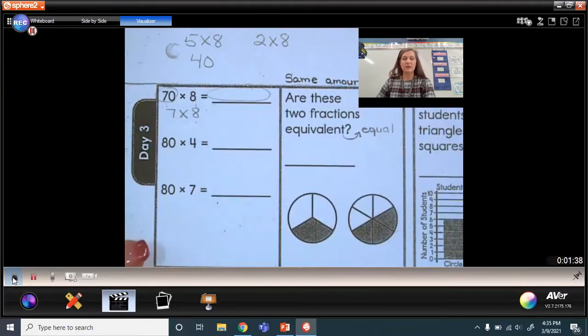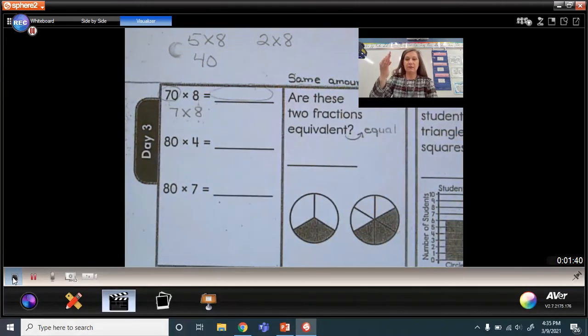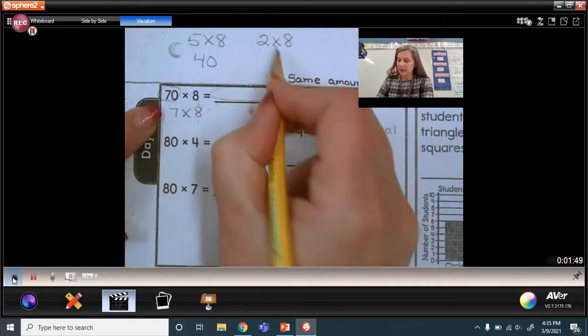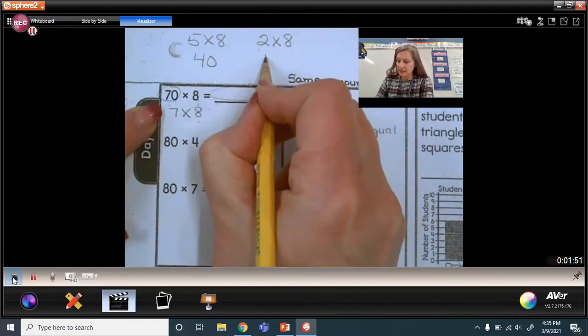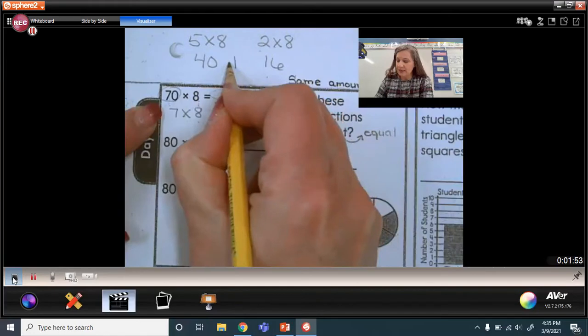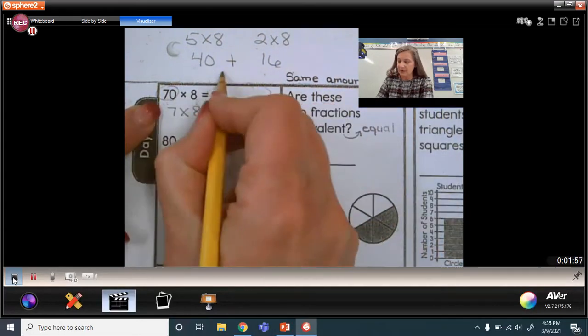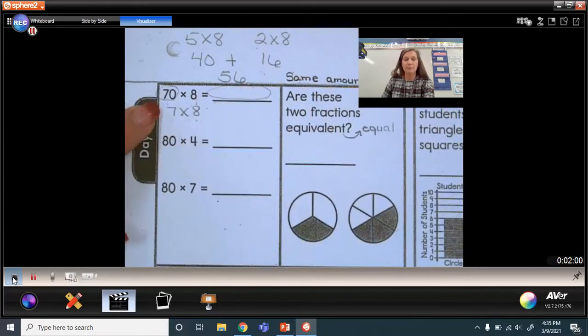So what is 5 times 8? If you said 40, you would be correct. So counting by fives, I say 5, 10, 15, 20, 25, 30, 35, 40. So I have 40. And another 2 groups of 8 would be 8 plus 8 is 16. So that tells me I have 56. When I add these together, 56 is going to be my total or my product.